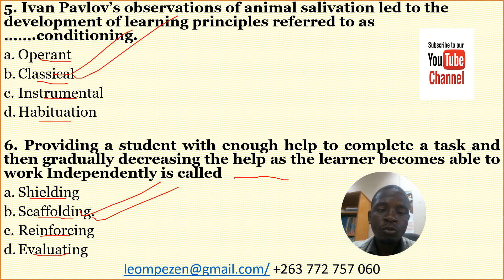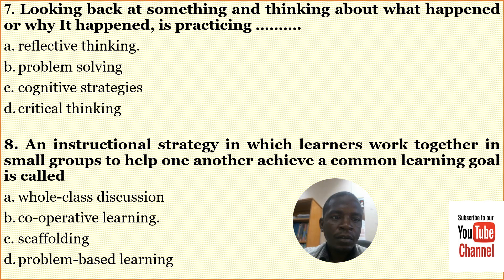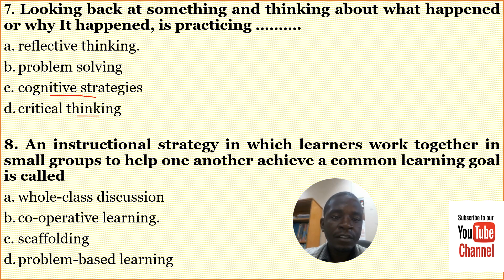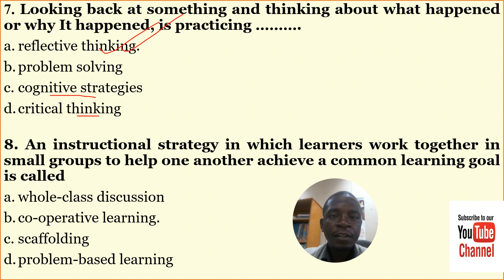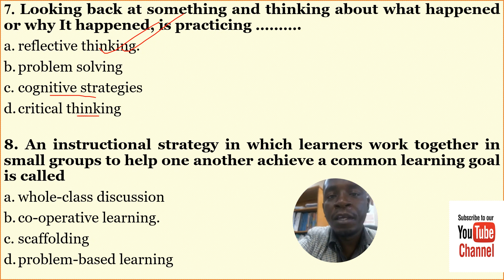Number seven: Looking back at something and thinking about what happened or why it happened is practicing — A: reflective thinking, B: problem solving, C: cognitive strategies, D: critical thinking. The correct answer here is A: reflective thinking. Reflective thinking is when one looks at something and thinks about why it happened or why it may be taking place.